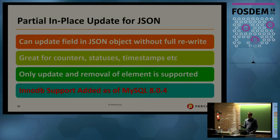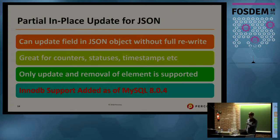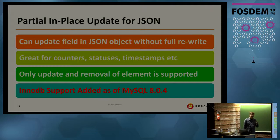Partial update of JSON is another very important performance feature. If you're storing large documents and only need to update one field - maybe a counter or a timestamp - you don't want the whole document rewritten. MySQL 8 can now update just that field inside the document without fetching and storing the whole thing back. It also handles this efficiently through row-based replication, logging only the changed field in a JSON column rather than the entire row.